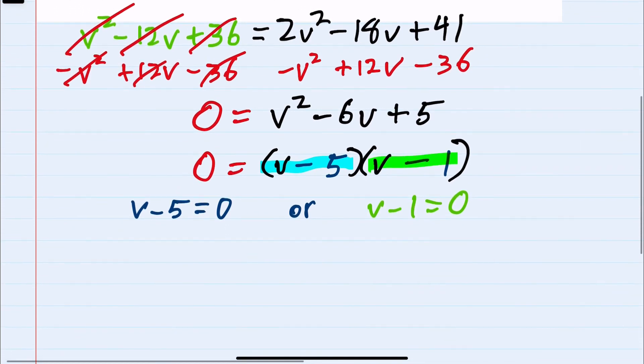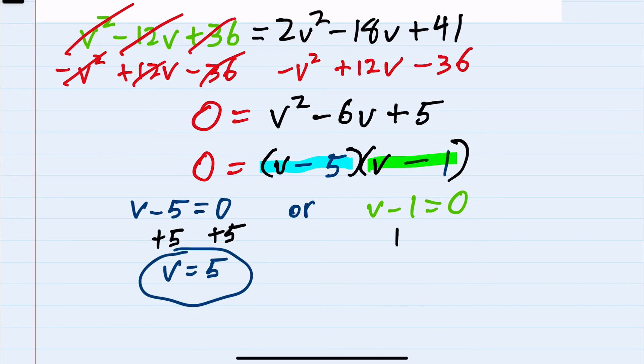Solving for each one of these, on the left, adding the 5 to the other side gives us v equals 5. Or, on the right-hand equation, adding 1 over to the other side gives us v equals 1. So we have two solutions: either v is 5 or v is 1.